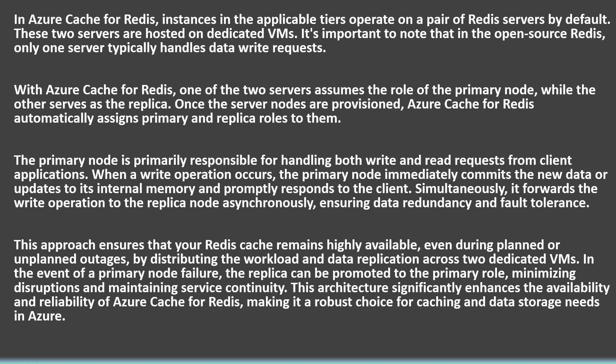This approach ensures that your Redis cache remains highly available, even during planned or unplanned outages, by distributing the workload and data replication across two dedicated VMs. In the event of a primary node failure, the replica can be promoted to the primary role, minimizing disruptions and maintaining service continuity.